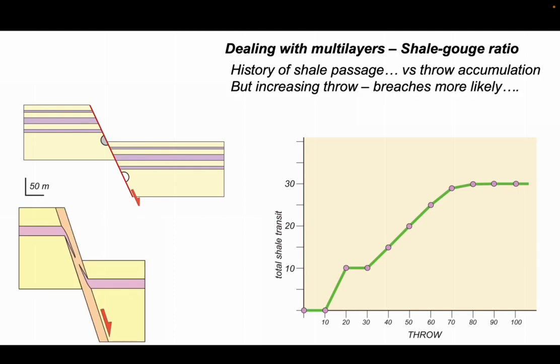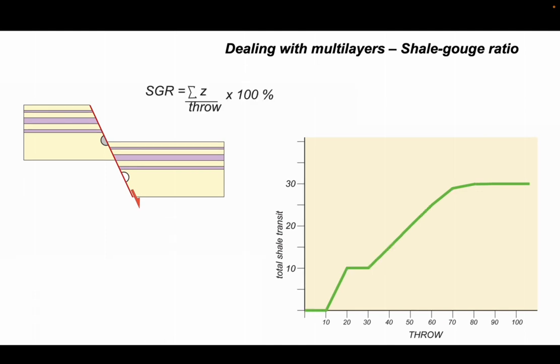But that's not forecasting the fault rock. Increasing throw makes breaches more likely, so we need to be able to build that breaching behavior into the graph on the right. This is where shale gouge ratio comes in. The shale gouge ratio is sigma z divided by the throw of the fault times 100 to get it into a percentage. Sigma z is the sum of the thicknesses of the shale that have past that point on the fault.